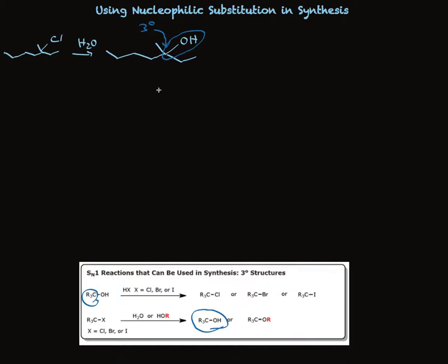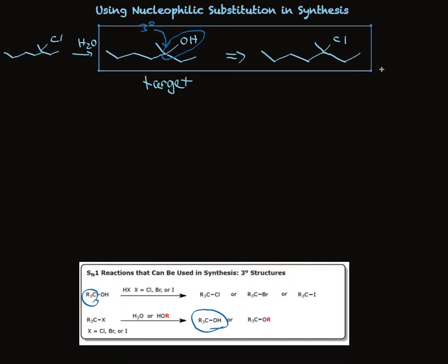And we see that if we want to make that compound, we treat the chloride with water. Now again, for synthesis purposes and planning, this is a target molecule. And it could come from, as we've just outlined, this chloride. So for synthetic planning purposes, here's what we write down. This target molecule, a tertiary alcohol, could come from the starting material, a tertiary chloride.